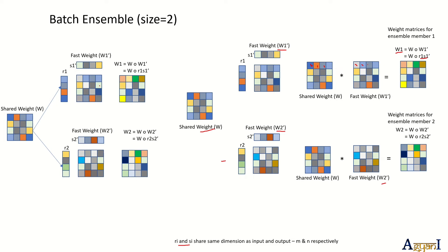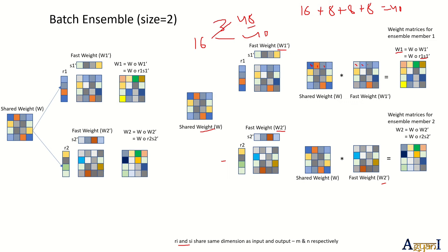For example, if a single model has 16 parameters, Deep Ensemble of size 3 requires 48 parameters. For Batch Ensemble, you have one shared weight of 16 plus rank-1 vectors for each of the three ensemble members — giving roughly 40 parameters total. This may not seem drastically less here, but as the number of layers and parameter sizes increase, you'll see a vast difference between them.